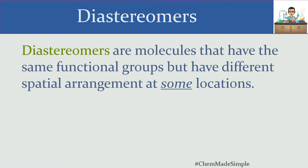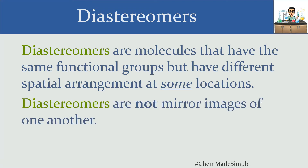Diastereomers are molecules that have the same exact functional groups, but how those functional groups are arranged spatially is not exactly the same. The points of difference between diastereomers are at some locations, but not all of them. That means diastereomers are not mirror images of one another, because in a mirror image everything is completely flipped — if we're only flipping some things, we're not looking at the mirror image of a molecule.